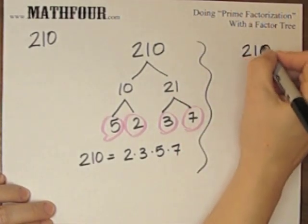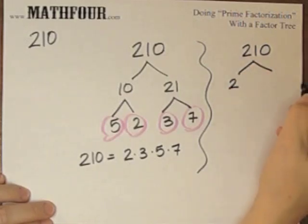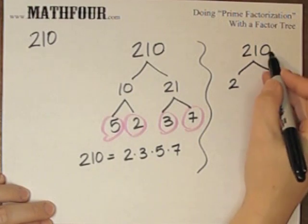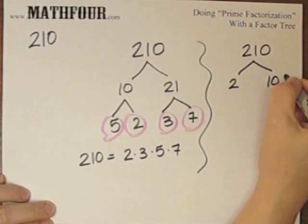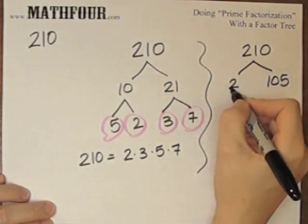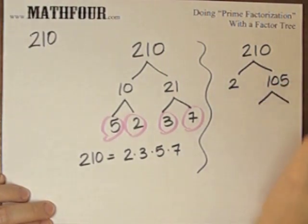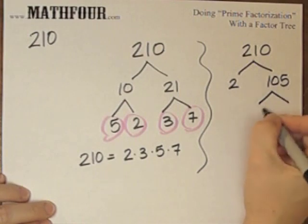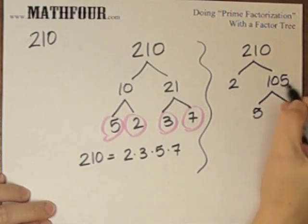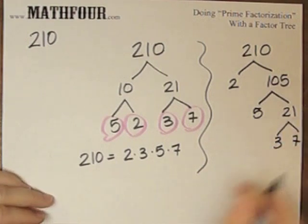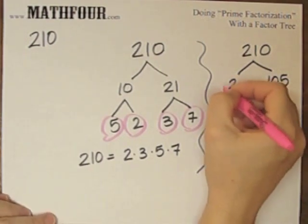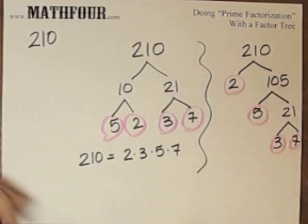So suppose I did this differently. Because it ends in zero, that's an even number — 2 goes into it, so it's 2 times 105. Here I stop because 2 is a prime. For 105, I see that 5 goes into it because it ends in 5, so this gives 21, and there I have 3 times 7. Well, there's my strangely not-so-symmetric factor tree.